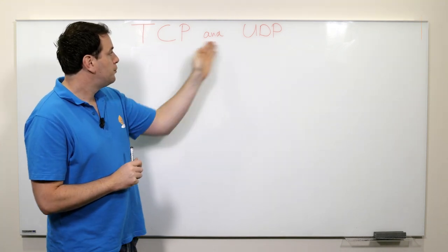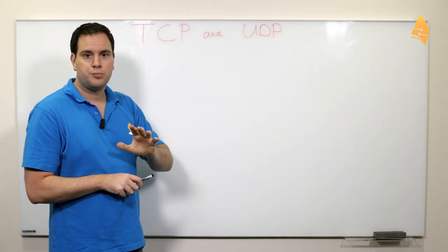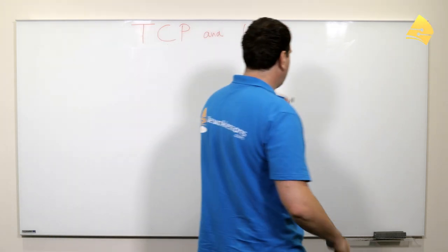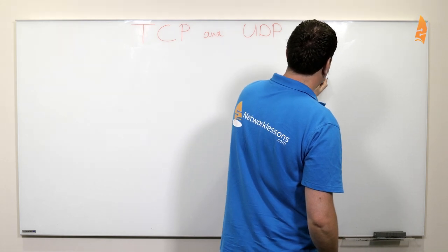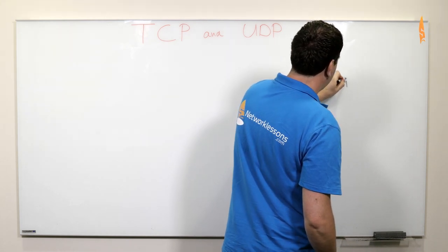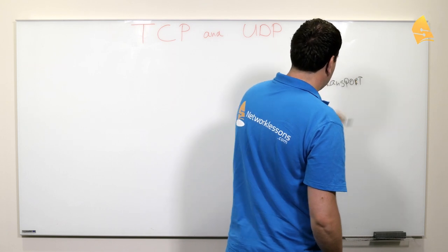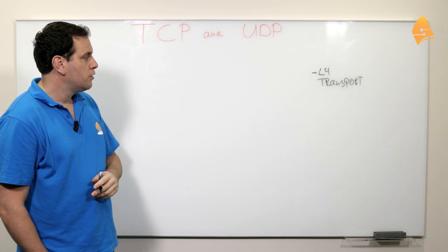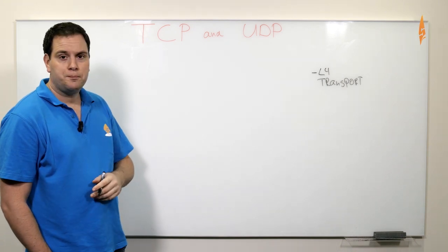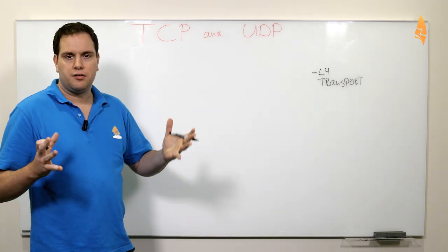So both these protocols are transport layer protocols. They operate at layer 4 of the OSI model and they are used to transport data. When we have an IP packet, an IP packet by itself doesn't do anything.